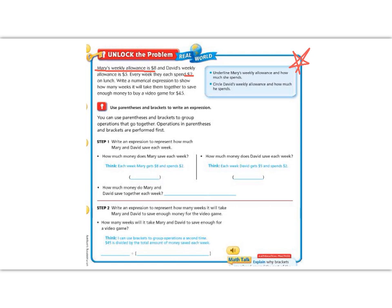Circle David's weekly allowance and how much he spends. David's is $5, I'm doing it in a new color, and he also spends $2. So we know that we're going to have to use all those numbers as well as get to $45.